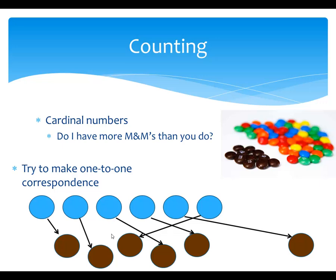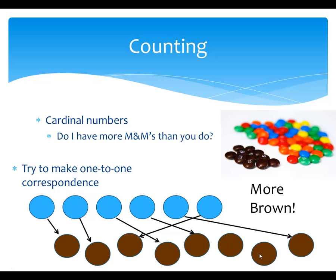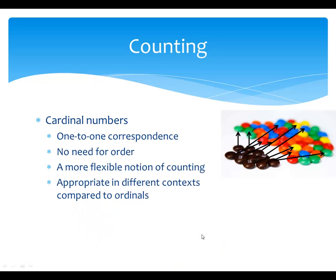I don't want to dismiss ordinal numbers — they're really cool, and they'll come back in a cool way toward the end of this series of videos. But cardinal counting is a more flexible way of comparing things. Here, because I can make this one-to-one correspondence, I say there's the same number of objects in these two sets. Now, here I've got something where it clearly looks like there's more browns than blues, and the way we say that officially in terms of cardinal counting is that we try to make this one-to-one correspondence. We've got an arrow coming out of every blue, but we're not hitting every brown. And so, there's going to be more brown in this case. The idea of cardinal numbers is that the way we compare things is the idea of one-to-one correspondence — there's no need for order. It's more flexible. And when we get to infinite quantities, it gives actually different answers.